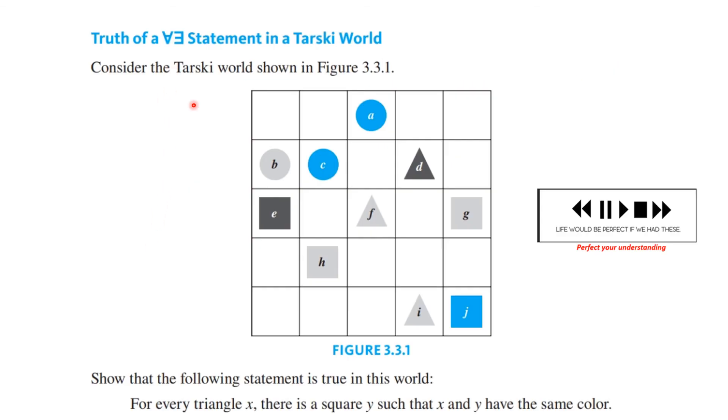So here is Tarski's world. We've talked about it before. What you are supposed to do is show the following statement is true in this world. For every triangle x there is a square y such that x and y have the same color. You know what to do.